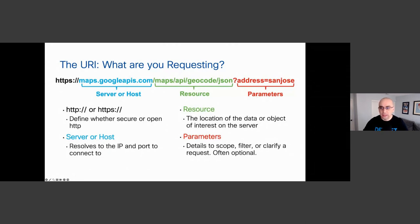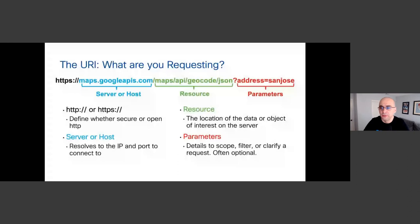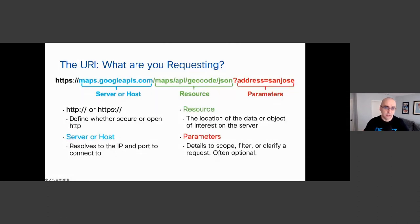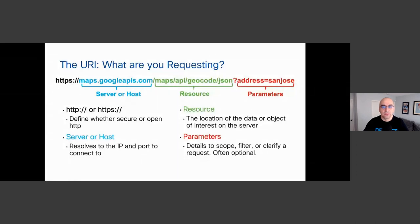Last but not least, you can pass in parameters after the question mark — for example an address of San Jose. Parameters provide filters and clarity to a request, limiting the scope. For instance, I want to return the address only for the San Jose area, not all addresses. Parameters are often optional. So the four main components are: HTTP or HTTPS, the server or host with any custom ports, the resource path specifying exactly where the resource is on that server, and optionally parameters after the question mark to filter the output.